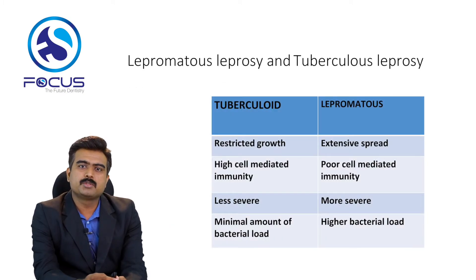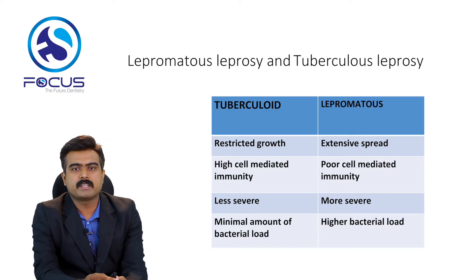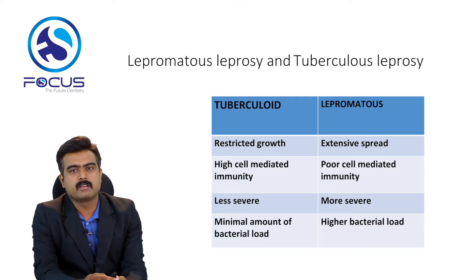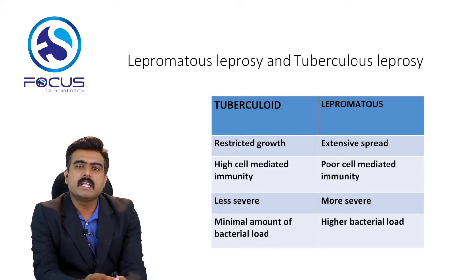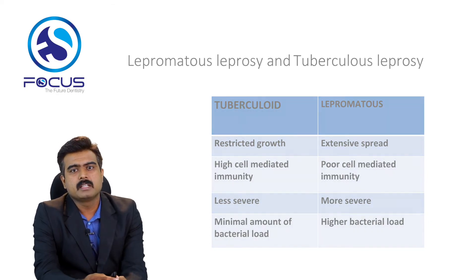When TB affects the vertebrae it is known as Pott's disease. Leprosy can be classified into two main types: tuberculoid and lepromatous. In tuberculoid leprosy there is restricted growth, very high cell-mediated immunity, less severe disease, and a minimal bacterial load. In lepromatous leprosy there is extensive spread due to poor cell-mediated immunity, more severe disease, and a very high bacterial load. Leprosy is caused by Mycobacterium leprae.